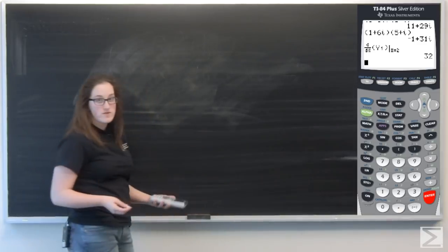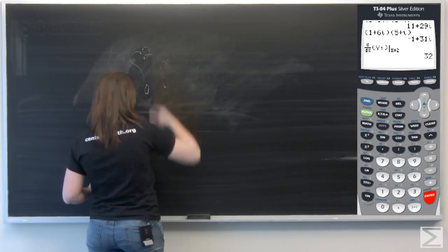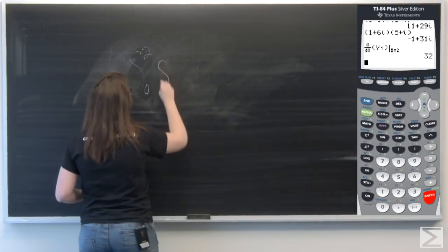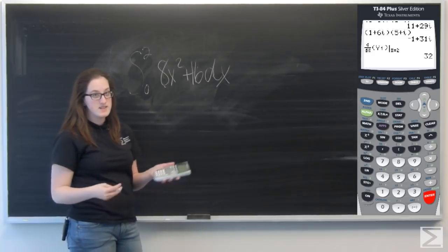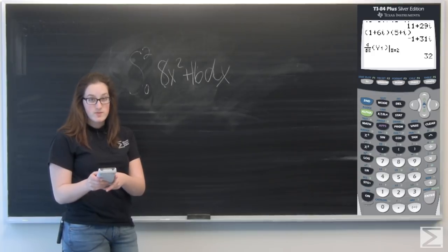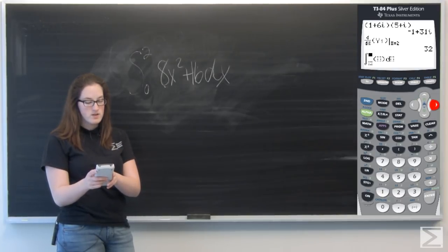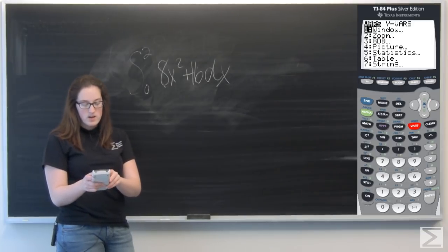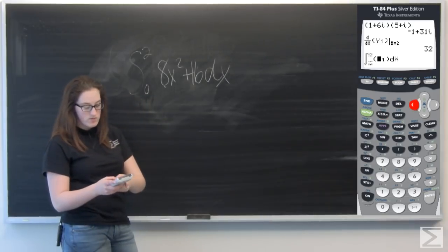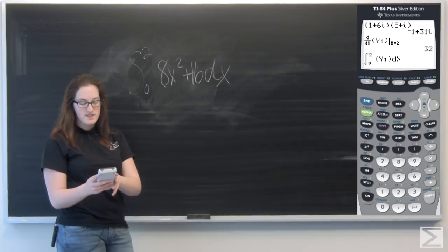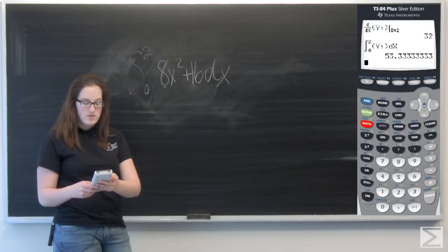And then now let's say I want to take the definite integral of that same function. So the integral from zero to two of 8x squared plus 16 dx. So go to math again. And this time scroll down to number nine. That's f n int. And it uses a similar formula. So I'm going to put the function in. Again I'm going to use vars. So vars y vars function y1 comma. And now I need the variable that I'm integrating with respect to. So x. And then my bounds of integration. So lower bound zero comma upper bound two. Close parenthesis and then hit enter. And I get 53.3 repeating. And let's say I want that as a fraction. Math. Frac. 160 over three.